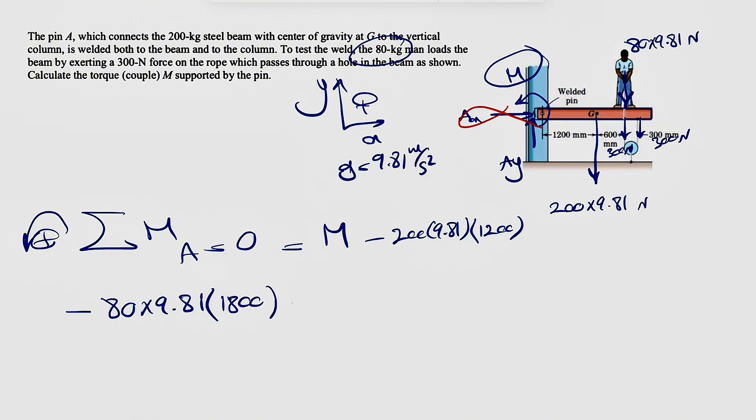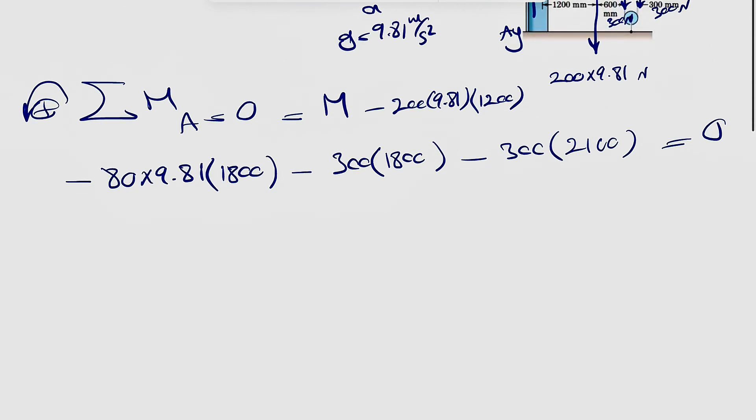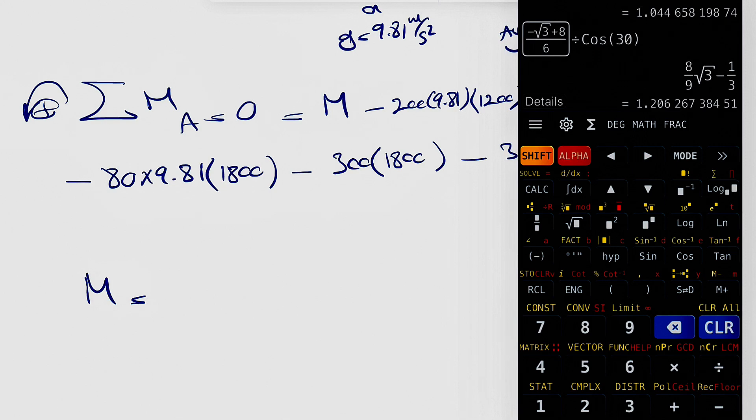And we're going to have the two 300 forces, one of them, all of them clockwise, so 300 times 1800, and the other one would be 300 times another 300, so this will be equal to zero, and we just have to calculate this value to find our moment.